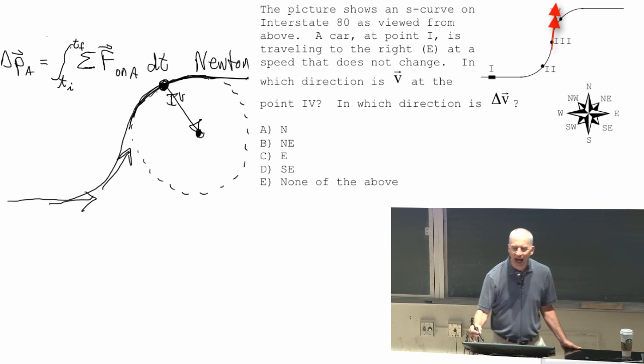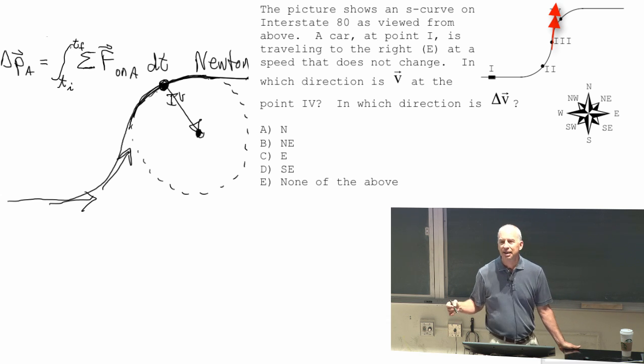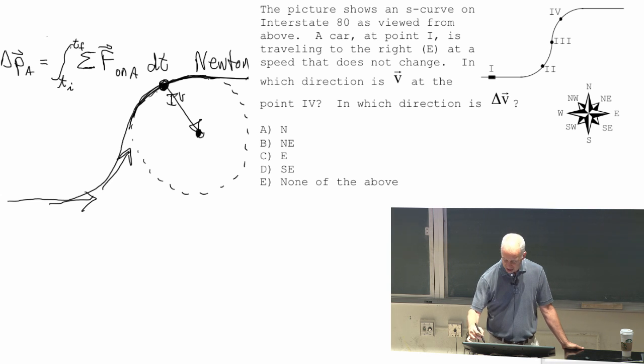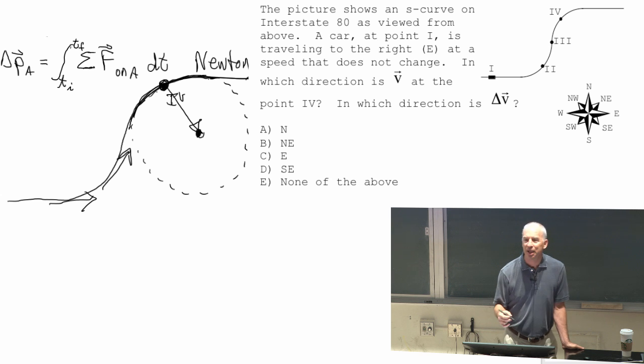So right at point three, it's strictly speaking not changing either way. Just before point three, it was going more toward the north. And just after point three, it's going more toward the east. It's turning in a different direction. But exactly at point three, the car is neither turning to the left nor turning to the right yet.